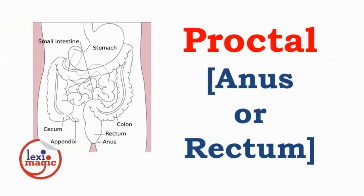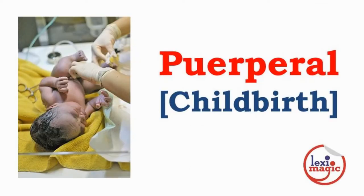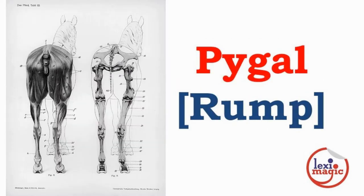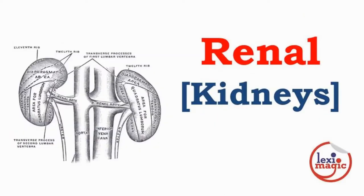Proctal refers to the anus or rectum. Prosopic refers to the face. Puerperal refers to childbirth. Pulmonic refers to the lungs. Pigal refers to the rump. Pyrotic refers to fevers. Renal refers to the kidneys.